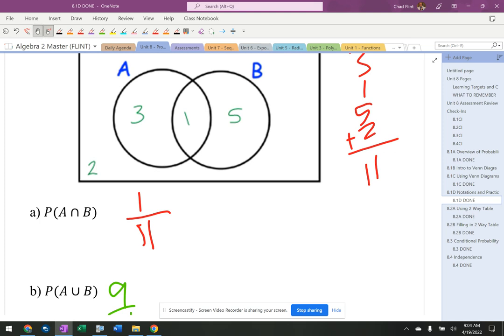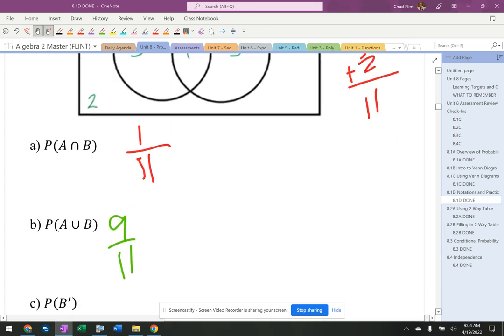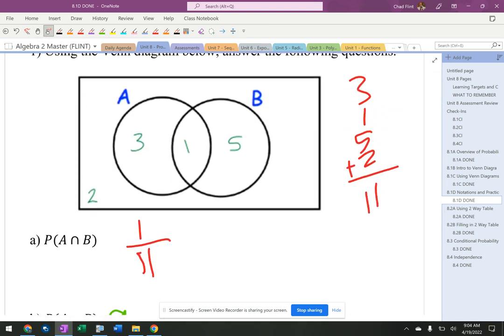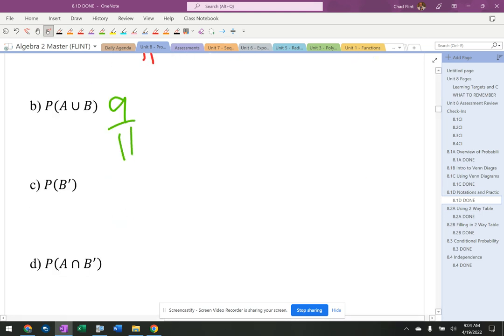Then it says probability of not B. Well not B is this over here and this over here, anything that is outside of the B circle, which is 5 things. So there are 5 things on the outside of the B circle.